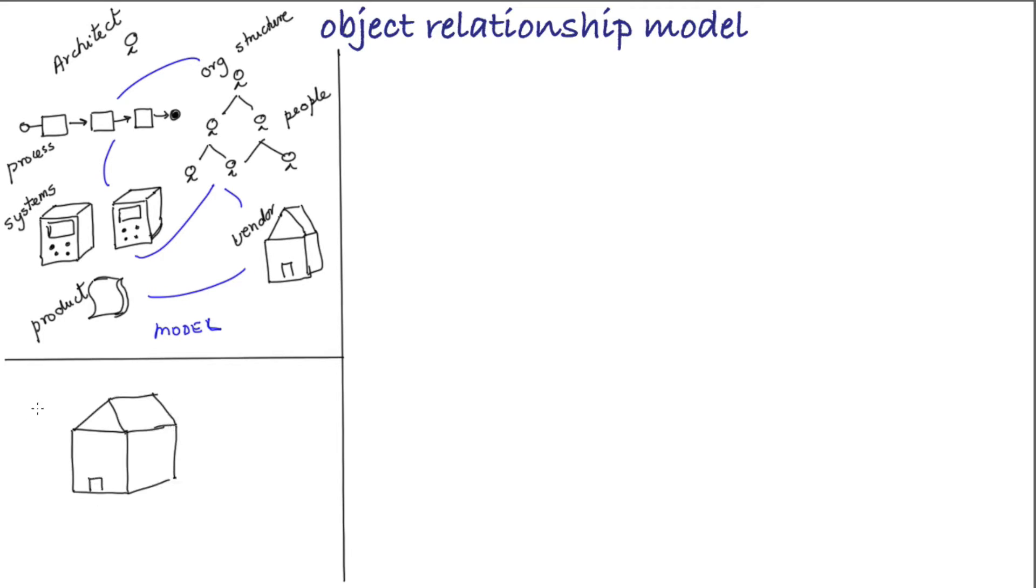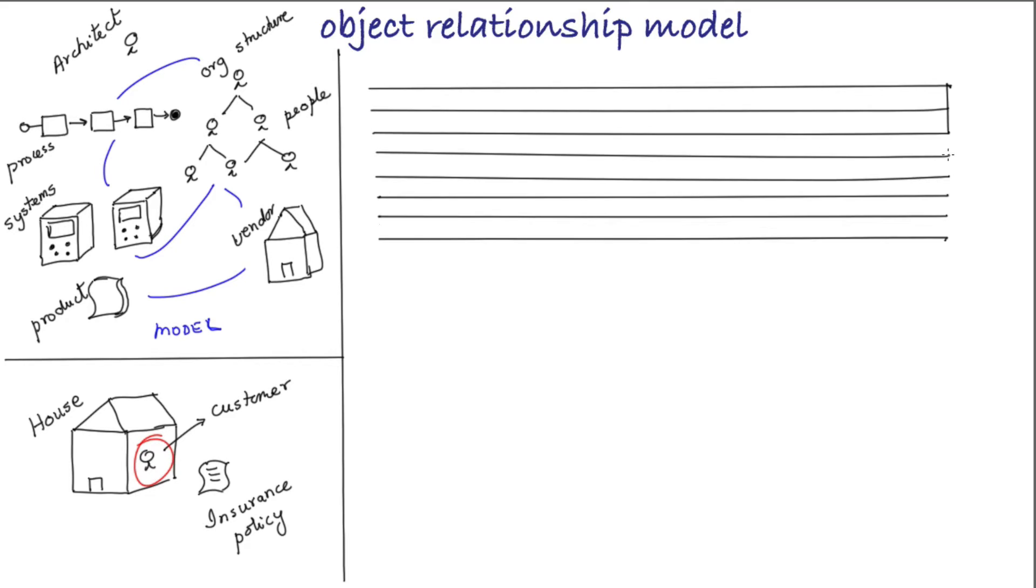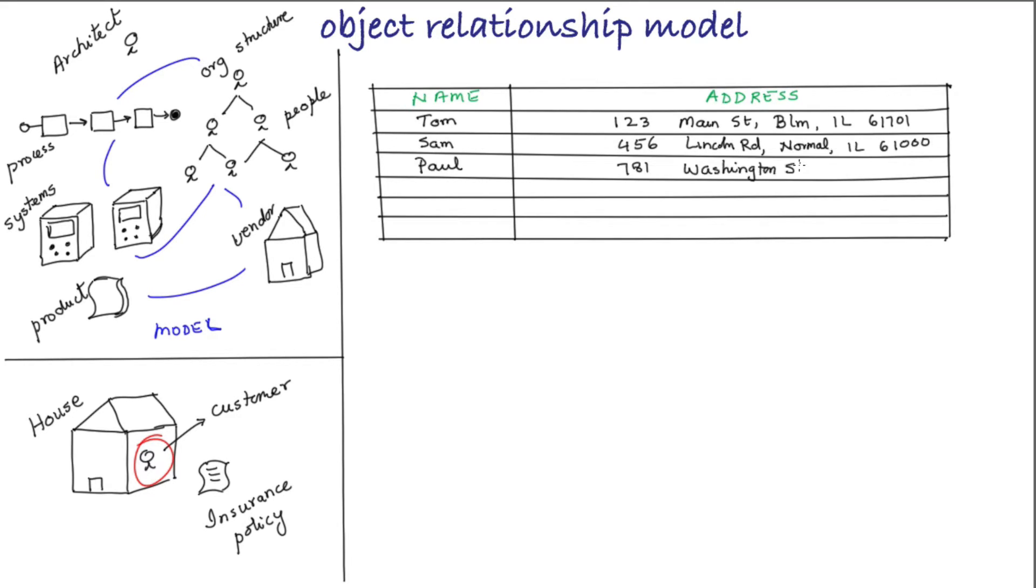Let's model the customers of an insurance company where each customer has home insurance policies. First, let's model the customer. You could list all your customers on a spreadsheet with their names and address of each property they own. You could represent the same information in an object relationship space as a single object with two attributes called name and address.